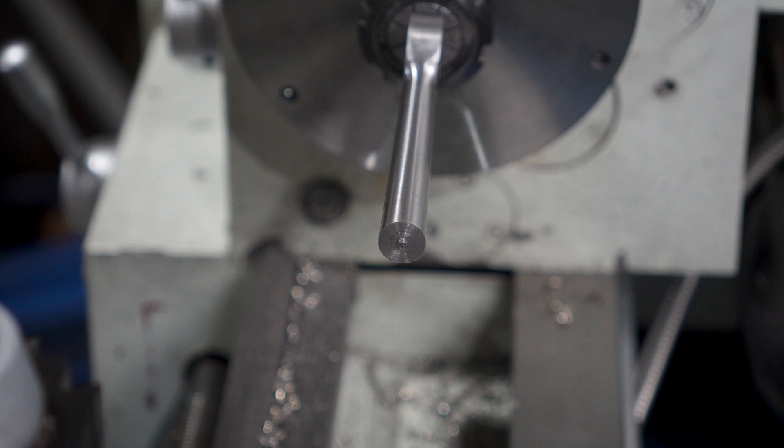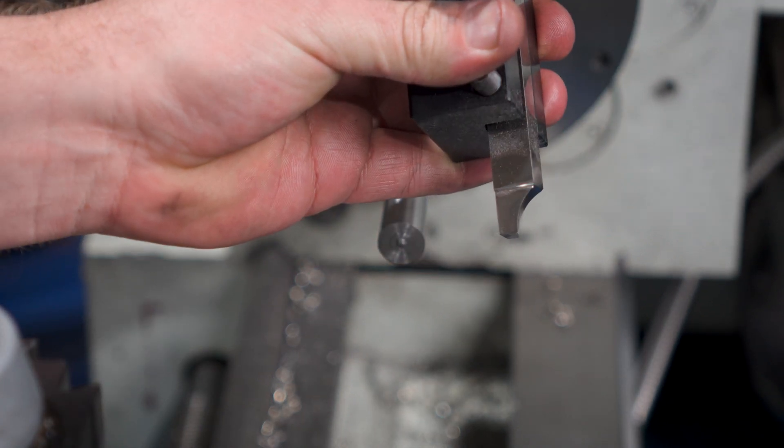To give it a little style, I'll punch in with a radius form tool to clean everything up, and that's the main body of the holder done.